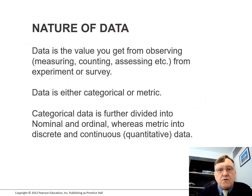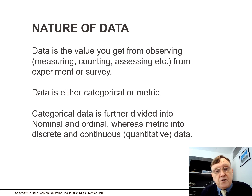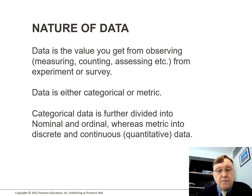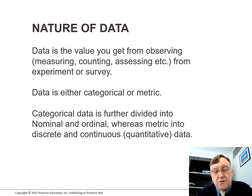So, the nature of data. Data is the value you get from observing, measuring, counting, assessing, etc., from an experiment or a survey. Data is either categorical or metric. Categorical data is further divided into nominal and ordinal, whereas metric data covers discrete and continuous quantitative data.